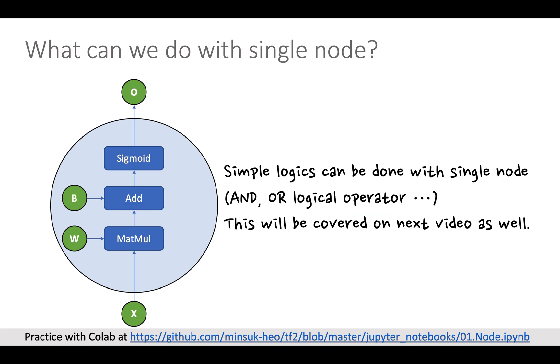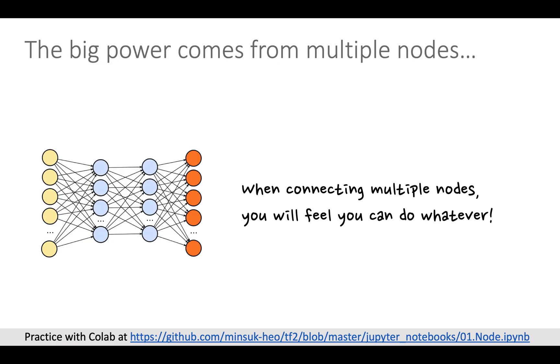Well, the next question: how many things can we do with this simple node? That is a valid question. And yes, we can do some simple logical gate operation and some simple logic with a simple node. But we cannot do something like self-driving, machine translation, which you may want to do with deep learning with just this single node. The power comes from connecting multiple nodes with backpropagation.